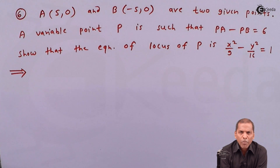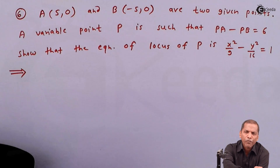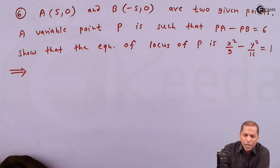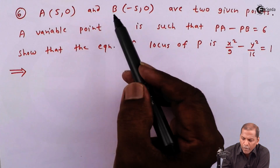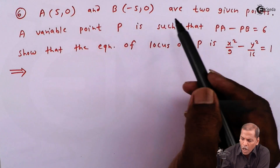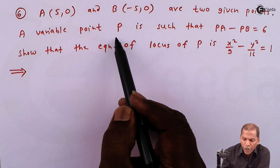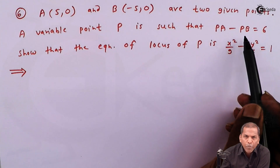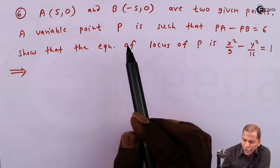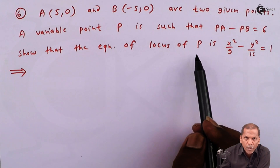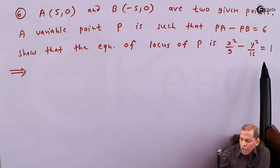Hello friends. Now we see problem number 6 which is based on equation of locus of chapter locus. Problem 6: A is at (5, 0) and B is at (-5, 0) are two given points. A variable point P is such that PA minus PB is equal to 6. We have to show that the equation of locus of P is x squared upon 9 minus y squared upon 16 is equal to 1.